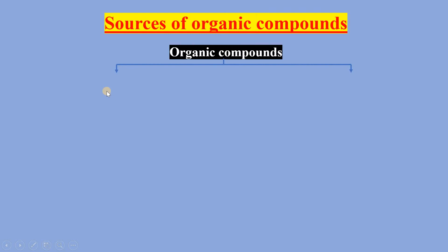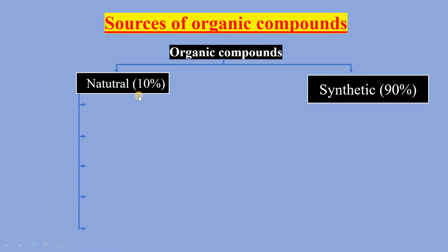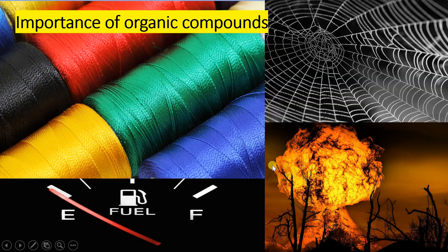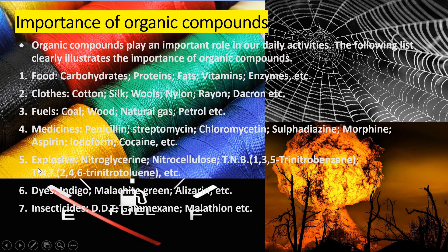Now we will see the sources of organic compounds. There are two types: natural sources and synthetic sources. Natural sources constitute 10% of total organic compounds, whereas synthetic sources constitute 90%. Natural sources include plants, animals, fungi, microorganisms, coal and natural gas. Organic compounds are very important in foods, clothes, soils, medicines, explosives, dyes, insecticides etc. From morning through night, we are all associated with the use of organic compounds — that is why organic compounds are an essential, non-divisible part of life. This is why we study organic compounds.